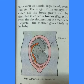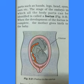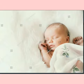The embryo gradually develops different body parts such as hands, legs, head, eyes, ears etc. At this stage, when all the body parts can be identified in an embryo, it is called a fetus. A growing fetus obtains nourishment from the mother's body. When the development of the fetus is complete, the mother gives birth to the baby.